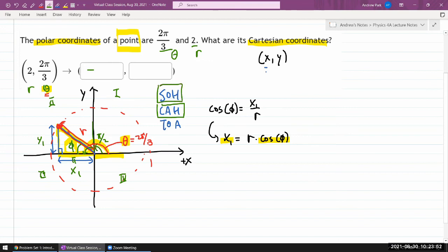Sine is opposite over hypotenuse, or writing out the relationship, sine of φ is equal to Y1 over r, or solving for Y1, Y1 is r sine of φ. And looking at this drawing here I can get that φ is 180 degrees minus... or sorry...